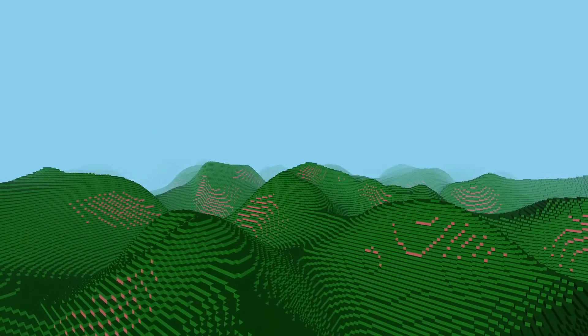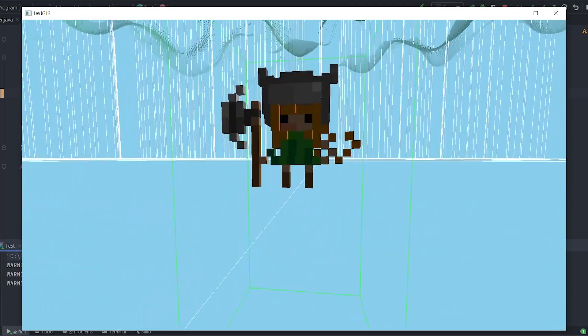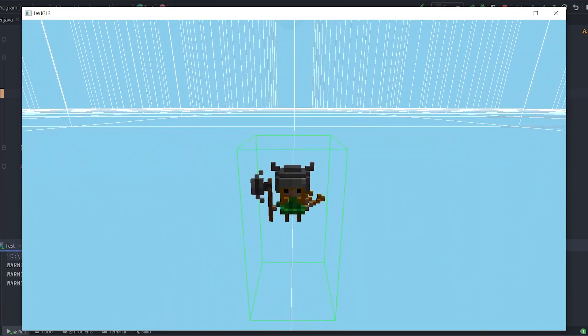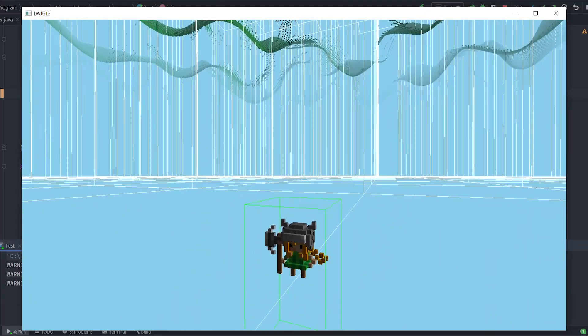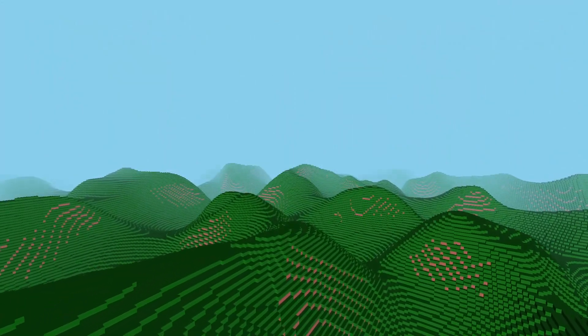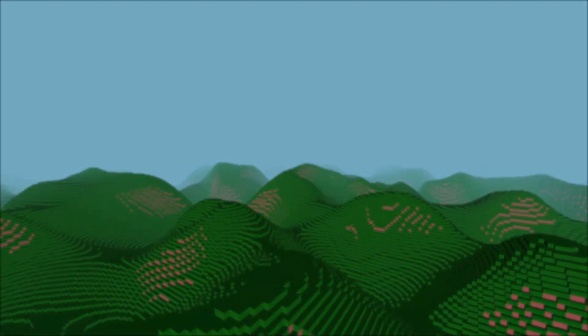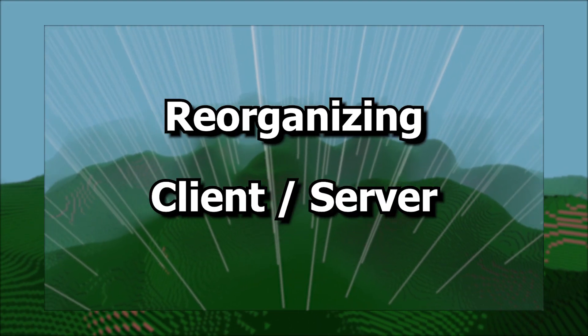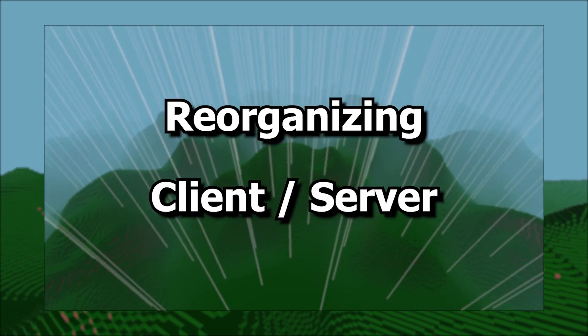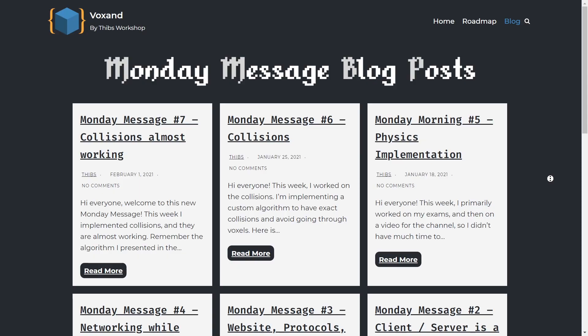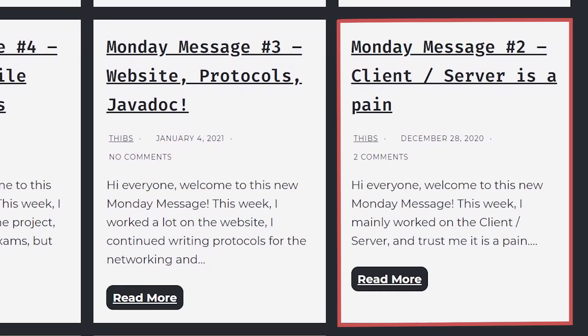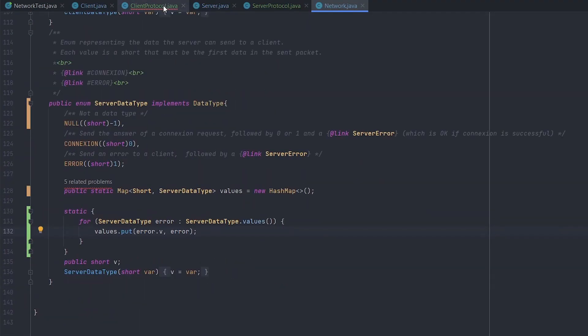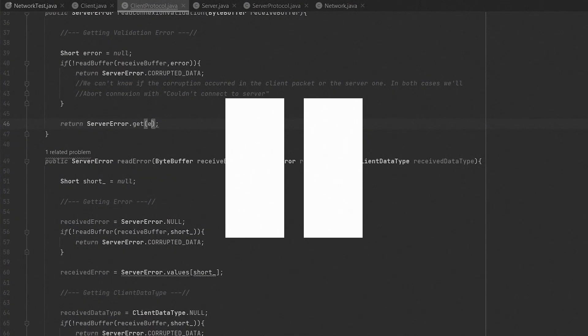Last time, we implemented debugging tools like Collider Visualizing to help us develop physics and collisions. At the end of the video, I said that just before implementing physics, I needed to separate the client from the server. Well, it turned out to be a very long process, as I explained in this weekly blog post. So I decided to pause the implementation and go for physics anyway.